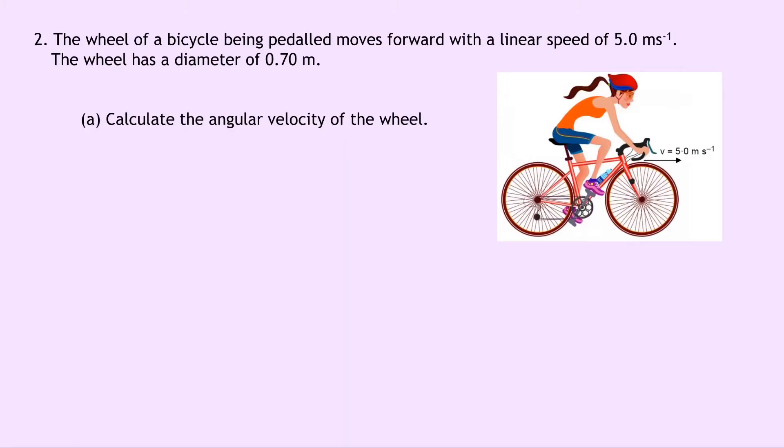Question 2 says that the wheel of a bicycle being pedaled moves forward with a linear speed of 5.0 meters per second. The wheel has a diameter of 0.70 meters. Part A says to calculate the angular velocity of the wheel. So writing down what we know from the question, we're trying to find angular velocity. We have the linear velocity V is 5.0 meters per second, and the radius again is equal to the diameter divided by 2, so that is equal to 0.70 divided by 2, which gives us 0.35 meters for the radius.